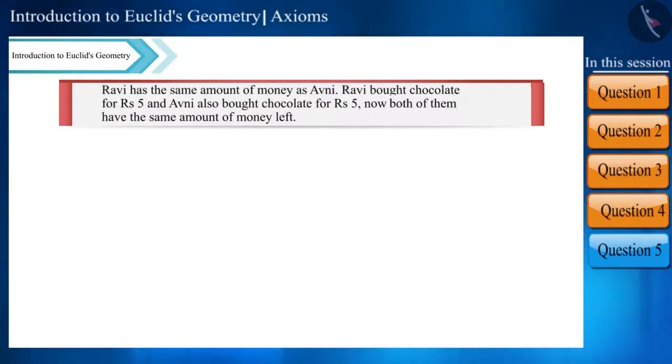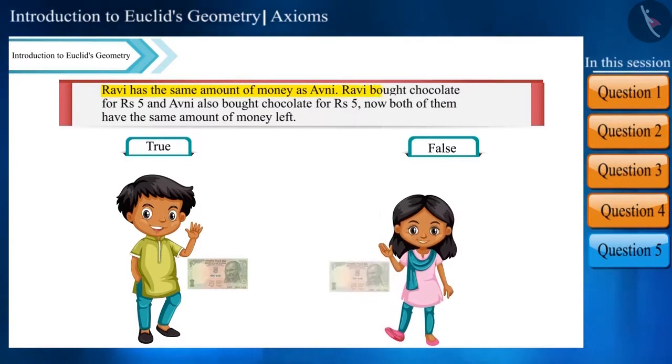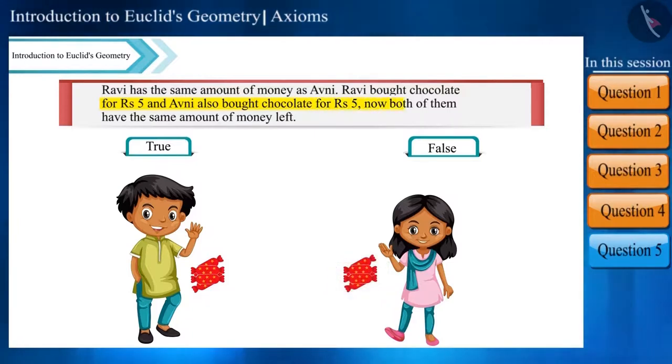Is this statement true? Read the statement carefully. Ravi has the same amount of money as Avni. Ravi bought chocolate for rupees 5 and Avni also bought chocolate for rupees 5. Now both of them have the same amount of money left.